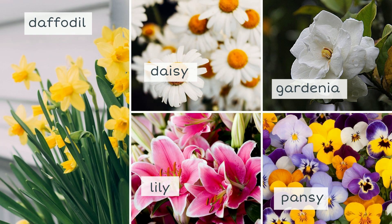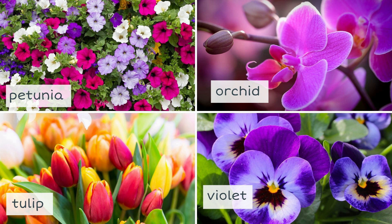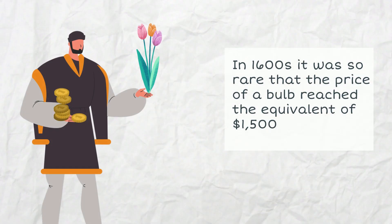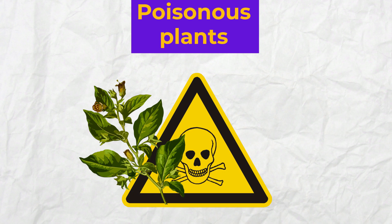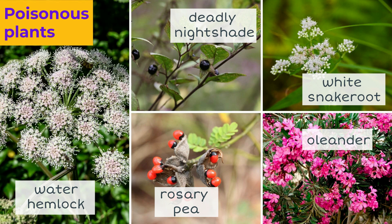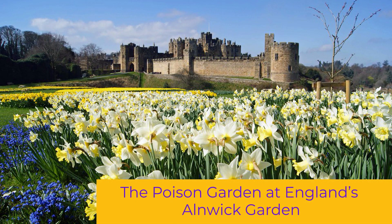So far we have talked mostly about plants that grow in the wild. Now let's take a look at some typical garden flowers: daffodil, daisy, gardenia, lily, pansy, petunia, orchid, tulip, violet. Do you know that once the tulip was more expensive than gold? In the 17th century it was so rare that the price of a bulb reached the equivalent of $1,500 nowadays. What is also important to know is that some plants can literally kill you. Some poisonous plants are water hemlock, deadly nightshade, white snake root, and rosary pea or oleander. You can see some of these plants in one place — the Poison Garden at England's Alnwick Garden.